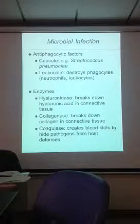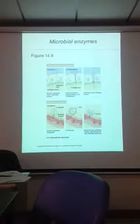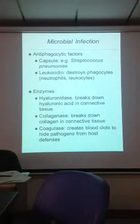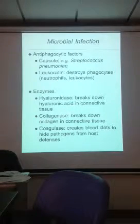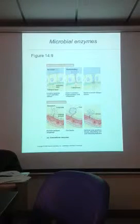Another example of how a microbe can spread is by producing certain enzymes. The microbe wants to spread, so it can produce enzymes that break their way through tissue. One example is hyaluronidase, which breaks down hyaluronic acid in the connective tissue. Collagenase is another example — it breaks down collagen in the connective tissue. Both enzymes break down connective tissue so that microbes can get through.